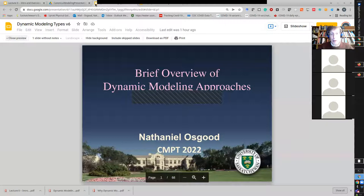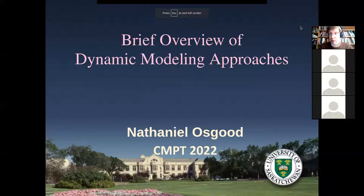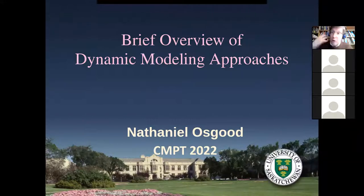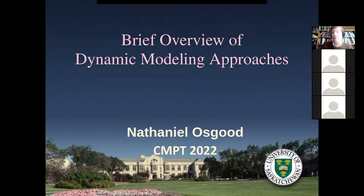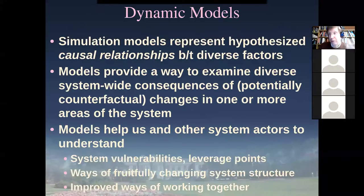Each of these types of modeling is good at depicting certain types of structure. Models are all about capturing structure with respect to the world and seeing the logical consequences of that structure. Each of these three types of simulation provides a natural, wonderfully concise and rich way of describing certain types of structure. And if we're dealing with a system that has diverse types of structure, we'll often weave together multiple types.